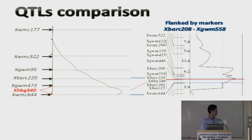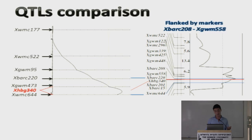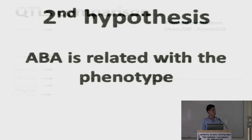We know that in between these two markers, the marker HBE 340 falls in the middle, and where the QTL is reported it is also in the middle. So it means these two traits — these two alleles — are very close to each other.